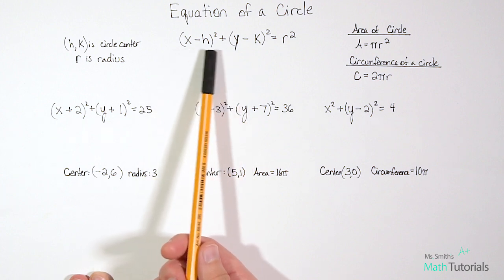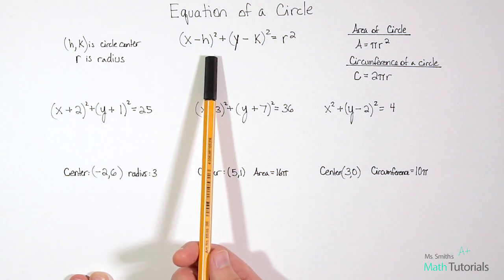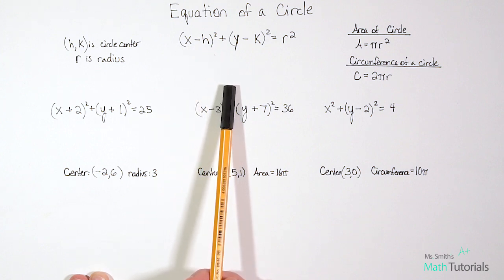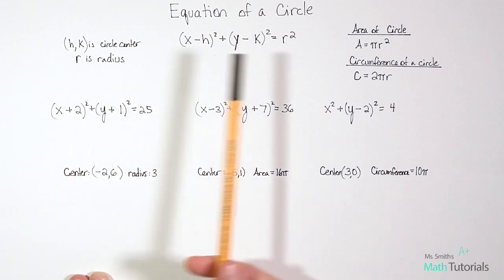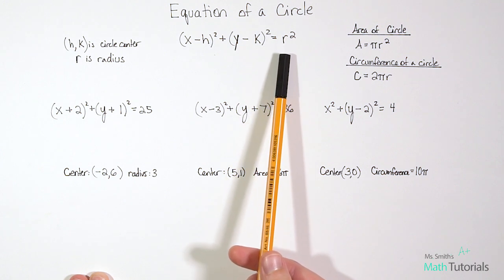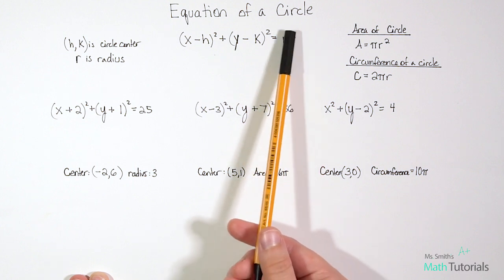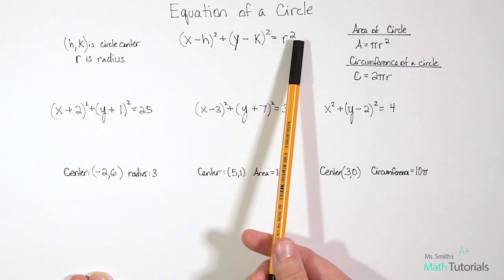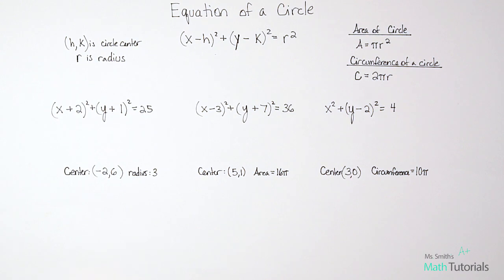Notice this is minus h and minus k. So when we pull our center information out of this, we're going to end up flipping the sign. Whatever sign you see in here for h — so if it's like a negative one, we're actually going to pull out a positive one. And r is the radius. When you see r squared, you'll need to take the square root of that number to figure out what r is.